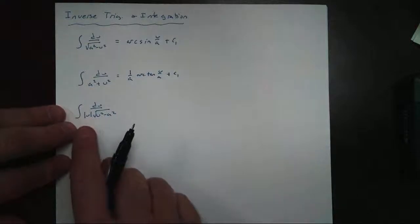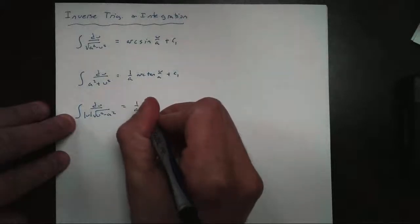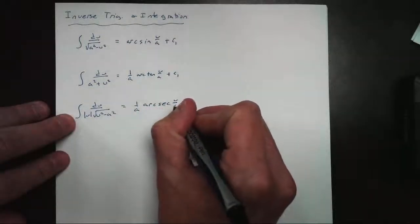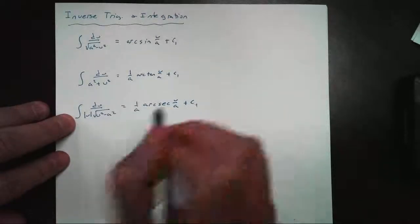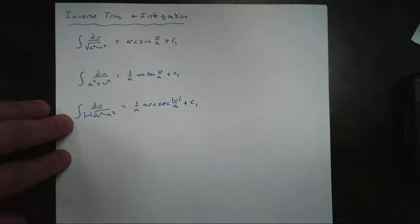And the last one, this is our arc secant. So kind of like arc tangent, we're going to get 1 over a times the arc secant of u over a plus c. And this is going to be absolute value, because like yesterday, u has to be positive in this situation. That's our radius right there.